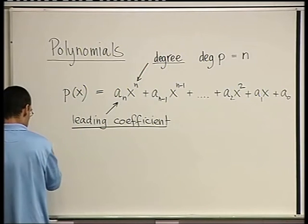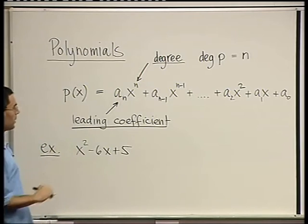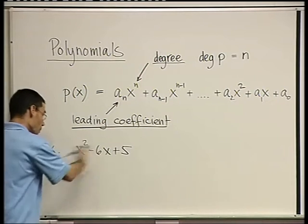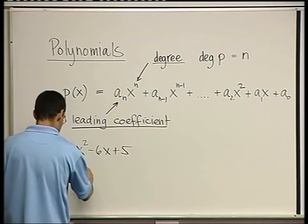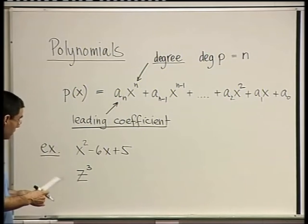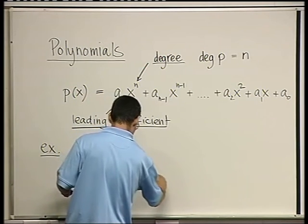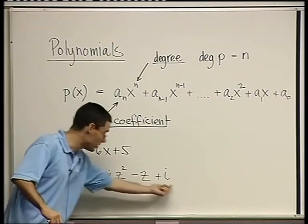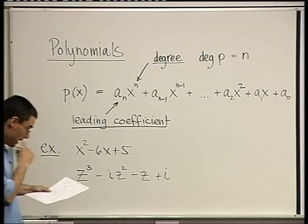And here are some examples. So x squared minus 6x plus 5 is a polynomial of degree 2. The leading coefficient is 1. Here's another example in the variable z. Sometimes in order to emphasize that a polynomial is a complex one, we write the variable as z. So z to the power 3 minus iz squared minus z plus i. Here's a polynomial of degree 3 over the complex numbers. I can see that because z kind of hints it, and in fact some of the coefficients are themselves complex numbers here.